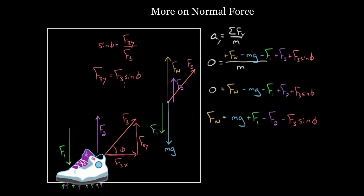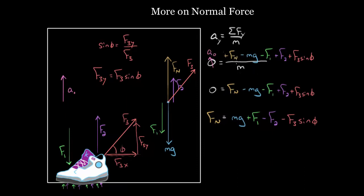One more way to step this problem up to the next level: say this room isn't just a room — maybe it's an elevator accelerating upward with some acceleration a₀. Nothing would change on the right-hand side. Sometimes people think if there's acceleration there's some new force, but if these are the forces, those are the forces. The only thing that changes is that instead of zero, you replace the left side with a₀. When you multiply by m, you'd have ma₀, and then a plus ma₀ term when you solve for the normal force.